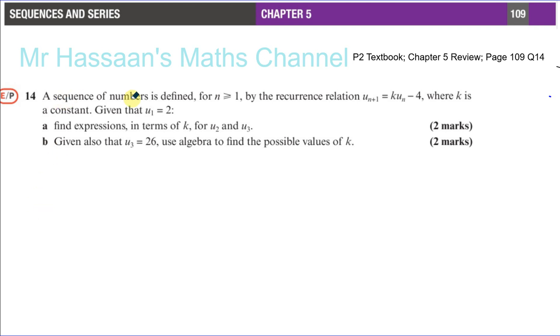It says a sequence of numbers is defined for n greater than or equal to 1 by the recurrence relationship u n plus 1 is equal to k times u n minus 4, where k is a constant. Given that u 1 equals 2, find expressions in terms of k for u 2 and u 3.